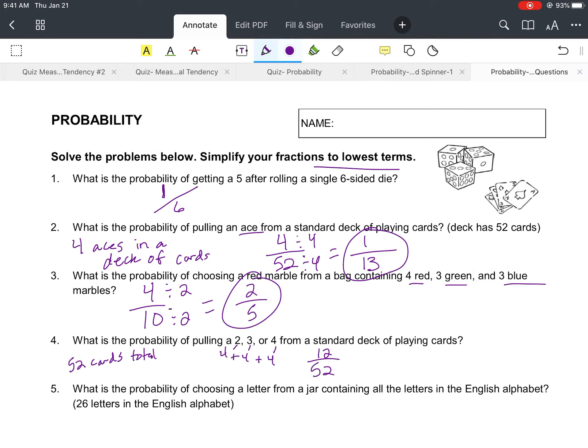So we know that there's a total of 52 cards, and we know we got to take four plus four plus four, which is going to give us 12. So 12 over 52 there, and we can divide by a factor of four.